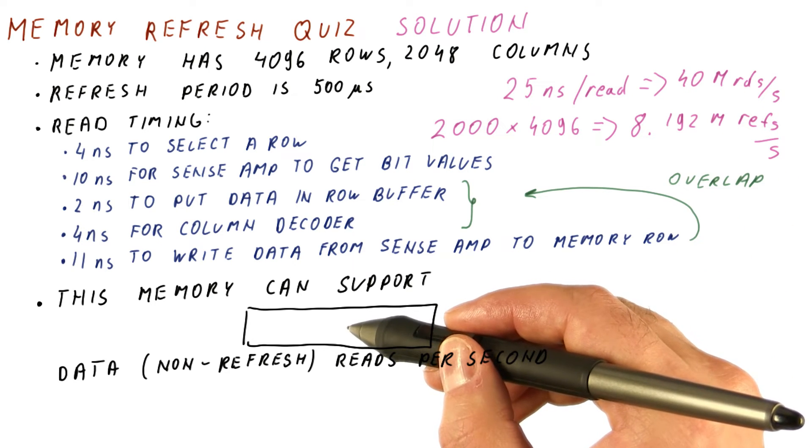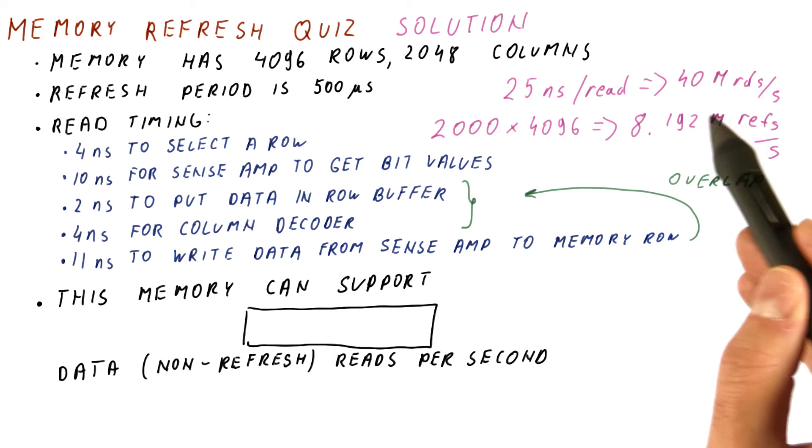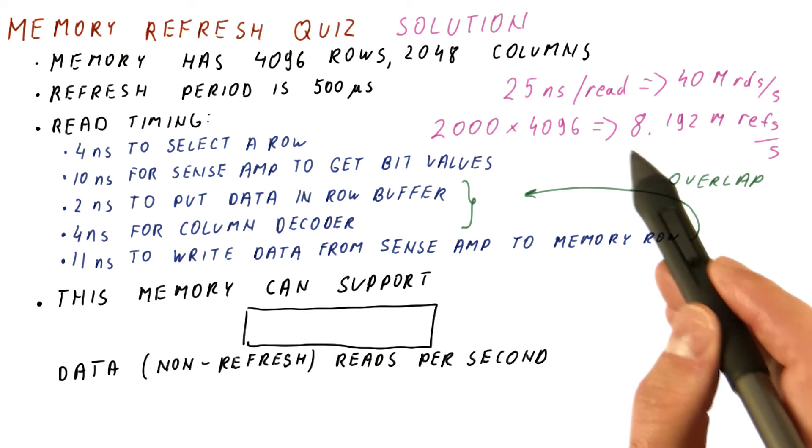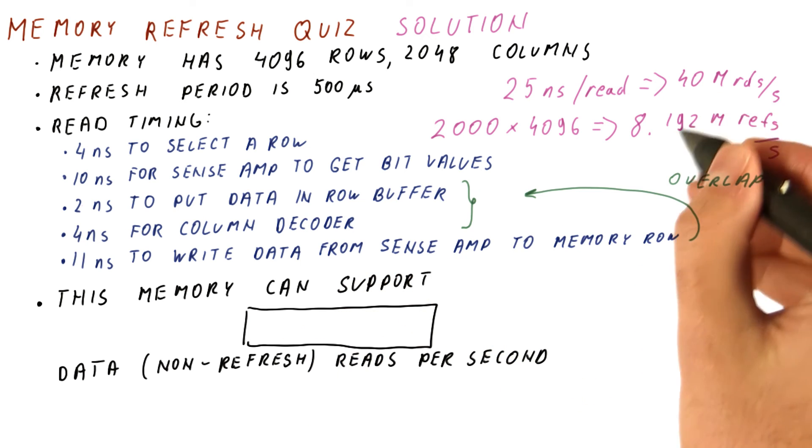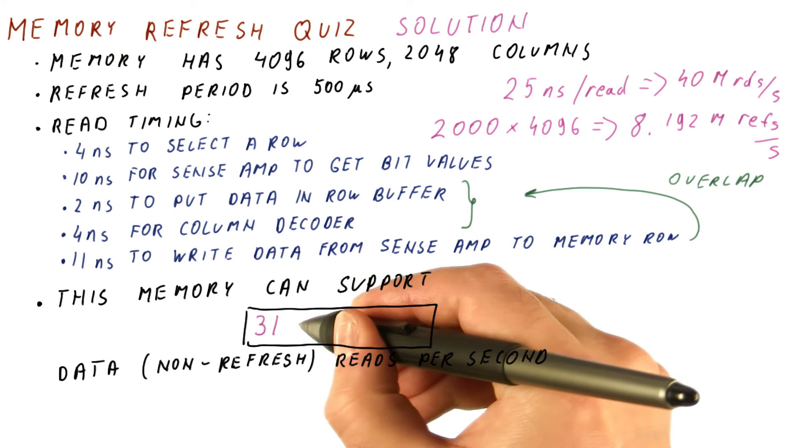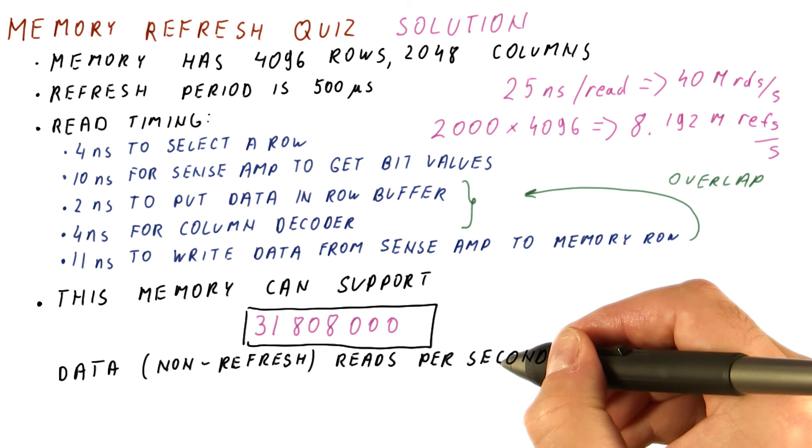So the overall result here is the difference between the two. That's how many reads do we have left after we have spent time on 8 and change million refreshes. So the final answer here is the difference between these, which is 31,808,000 reads per second.